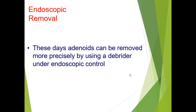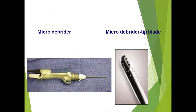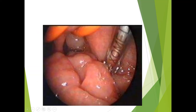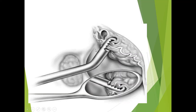These days, endoscopic removal is performed. The adenoids can be removed more precisely using a microdebrider under endoscopic control. The microdebrider eats away all tissue in its path. You can see the adenoid tissue being sucked inside the microdebrider.